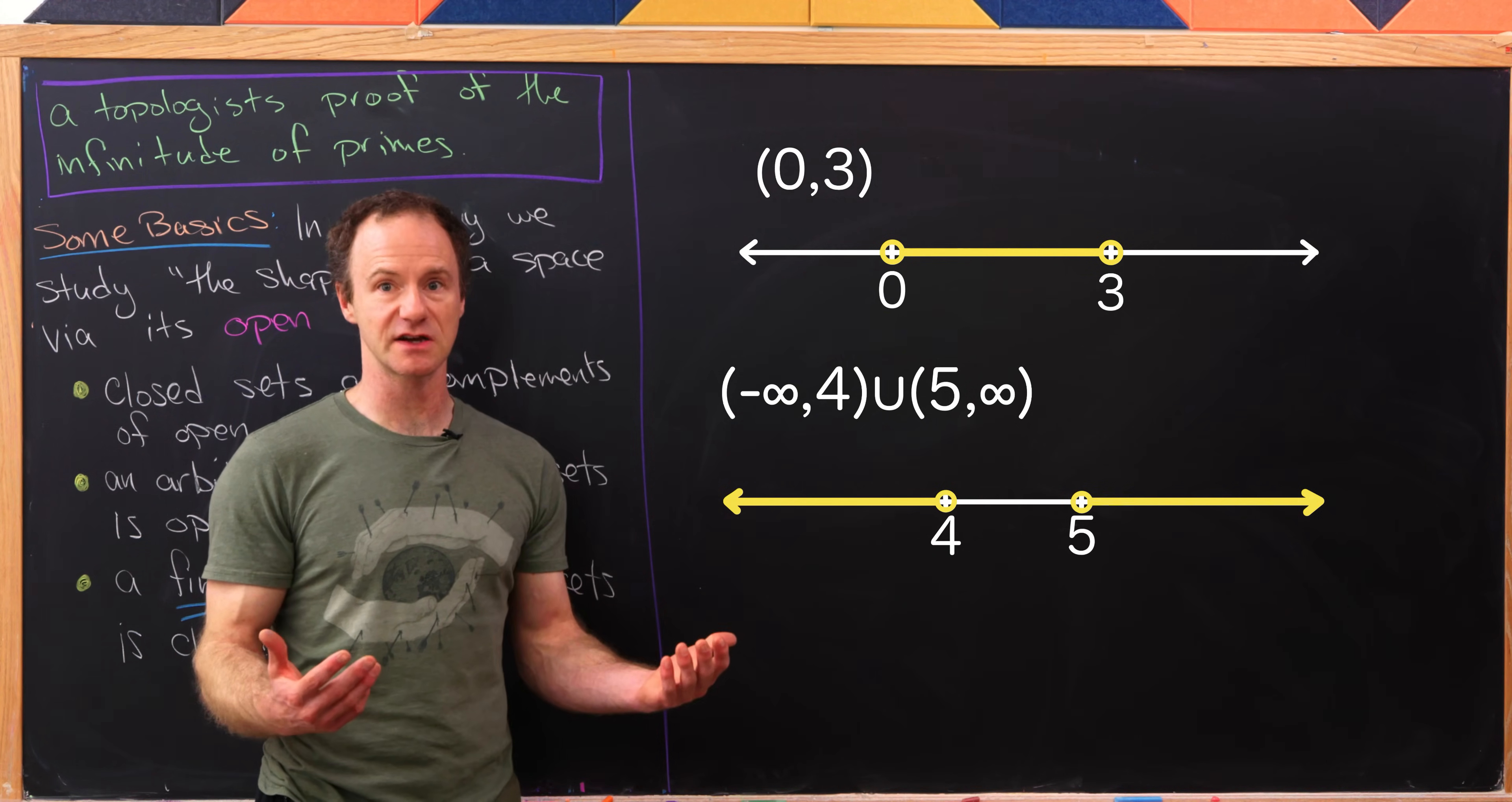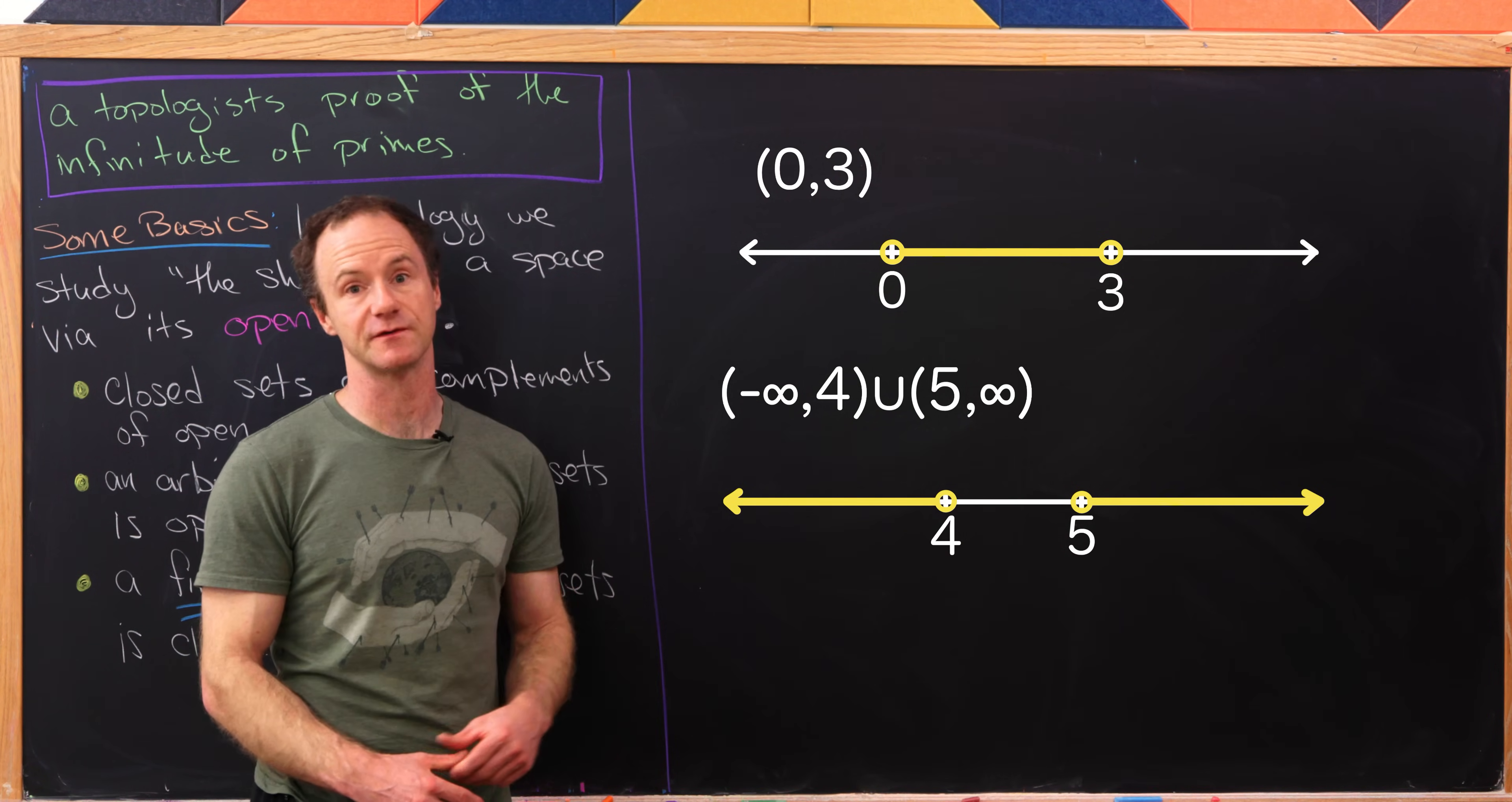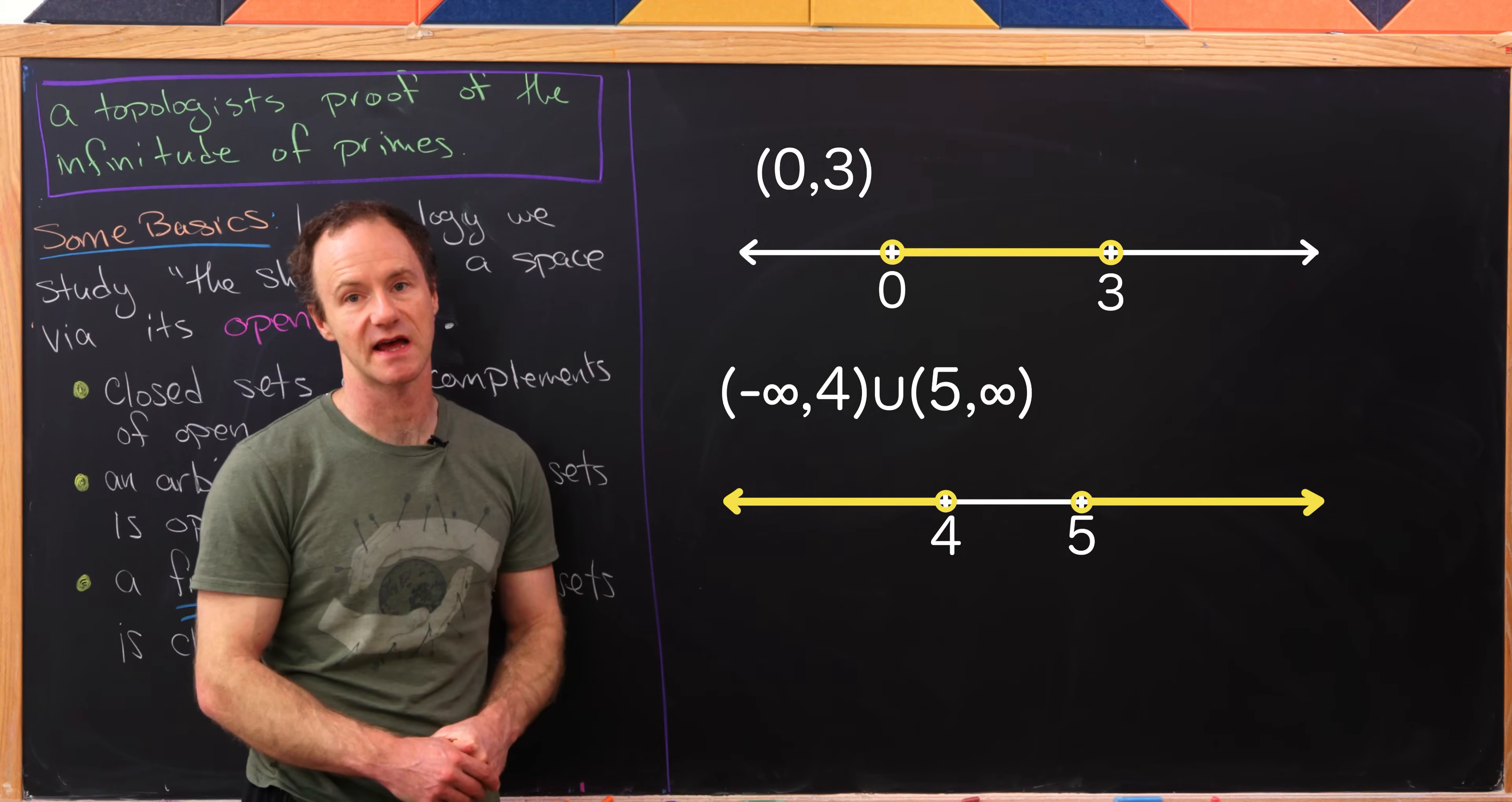Or since these are the basic open sets and we can union them to get another open set, that means the union of the interval from negative infinity to 4 and 5 to infinity makes another example of an open set.